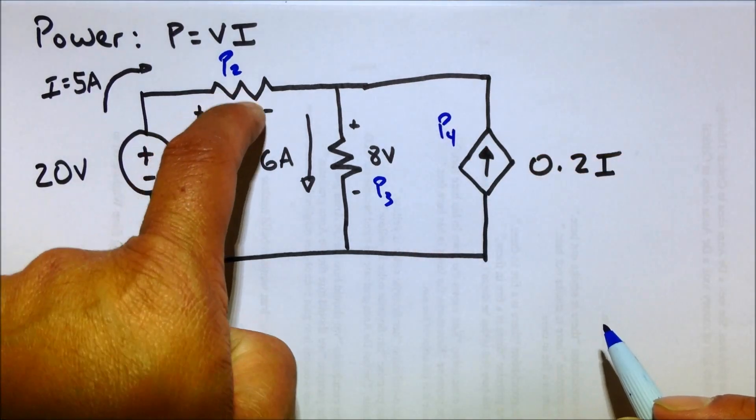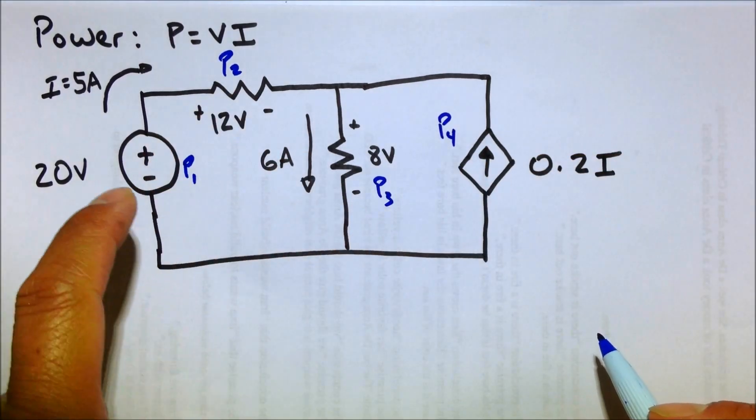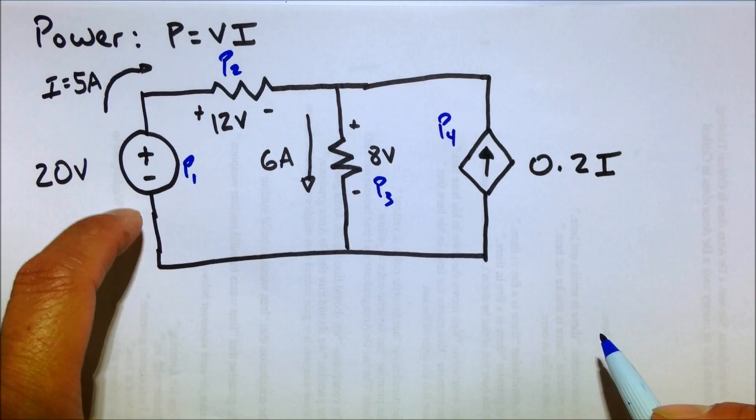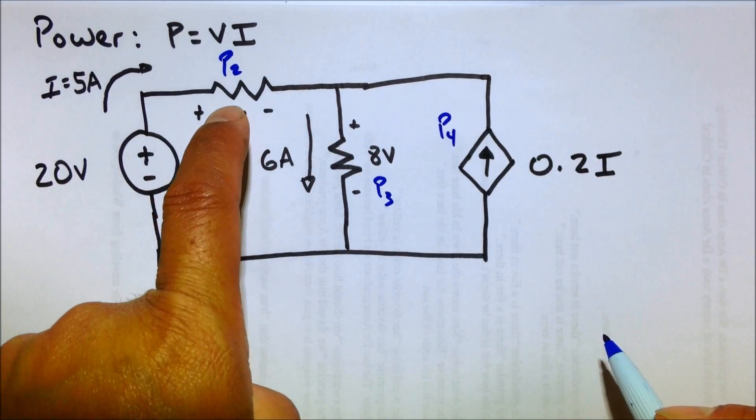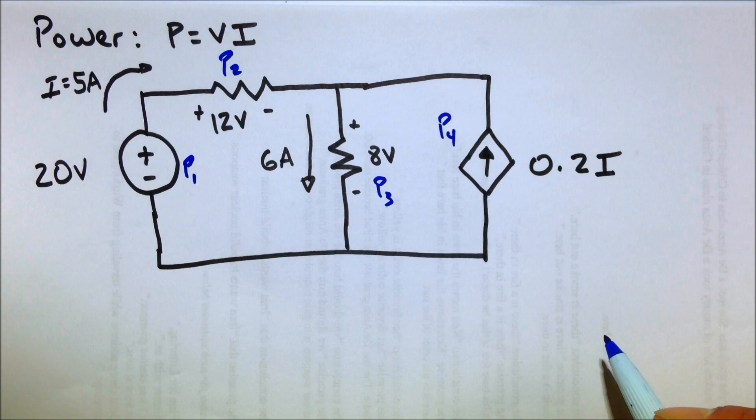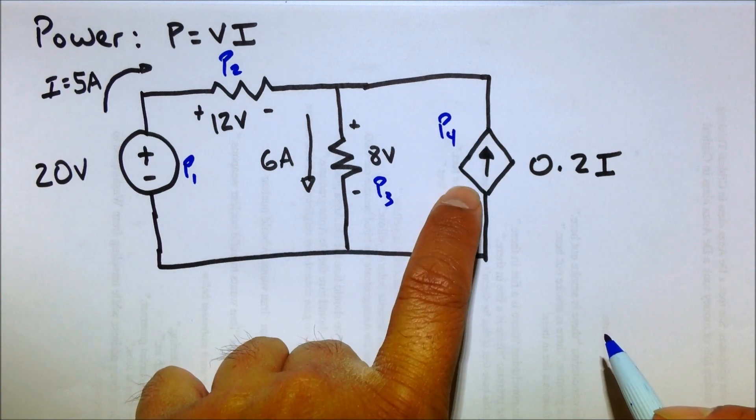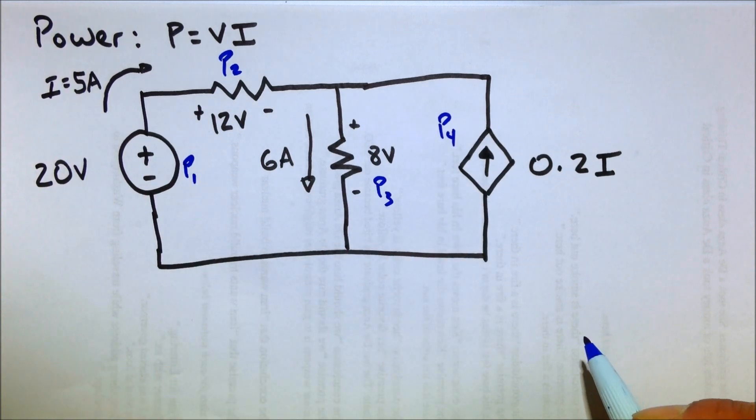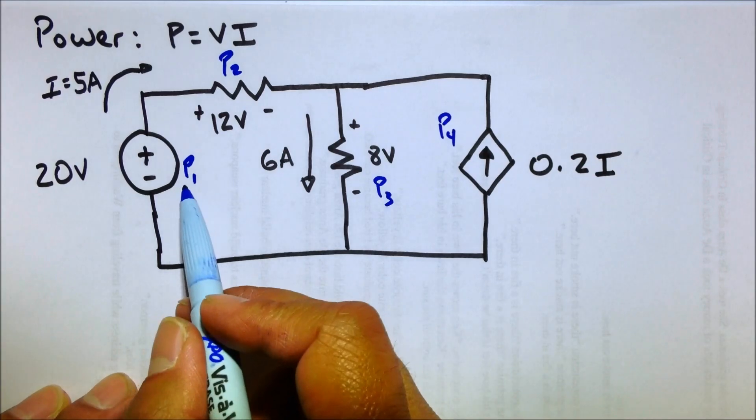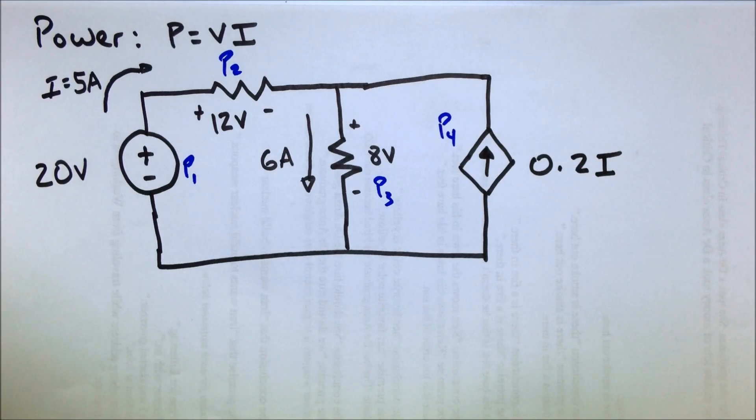So we have four different powers to solve: power supplied by this dude, power consumed by that resistor, power consumed by that resistor, and then power supplied by that source, that energy source, that current source. So let's take these one at a time. P1. So let's solve for P1. Let's use red. Does red sound good?